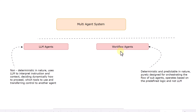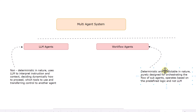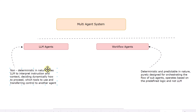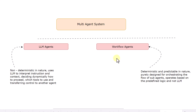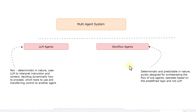Whereas workflow agents are deterministic and predictable in nature. They are purely designed for orchestrating the flow of sub-agents. Workflow agents work on predefined logic and are not driven by an LLM. So using LLM agents you get something non-deterministic with no predefined path, but using a workflow agent you can define a path and keep your goal deterministic and predictable.